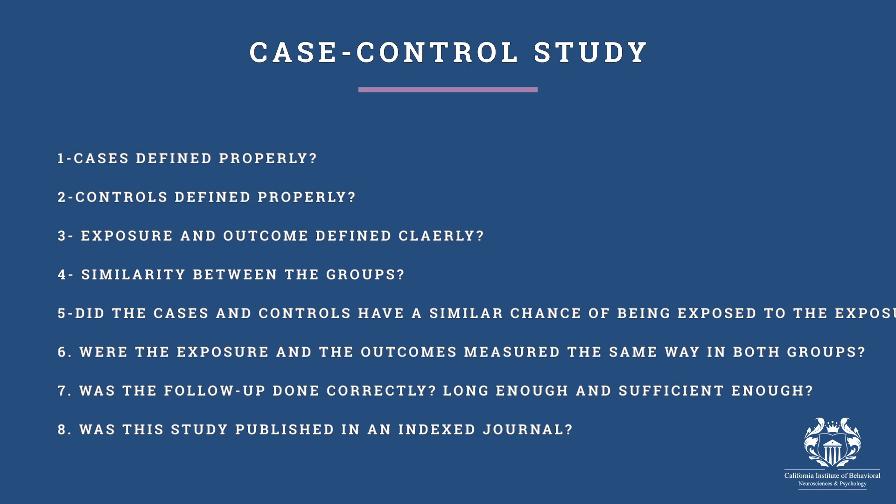Number four: were there similarities between the groups — were the cases and controls comparable? Number five: did the cases and controls have a similar chance of being exposed to the exposure of interest? Number six: were the exposure and outcomes measured the same way in both groups? Number seven: was the follow-up done correctly, long enough, and sufficient?